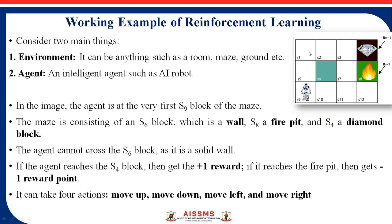The first correct path is: S9, S5, S1, S2, S3, and diamond. The second correct path is: S9, S10, S11, S7, S3, and diamond. These two paths are the perfect paths. If the robot follows either path and reaches the diamond, it wins the game. For all these actions, there are four possible moves: move up, move down, move left, and move right. For each correct action, the agent receives a plus one reward, and for each incorrect action, a minus one reward.